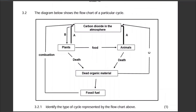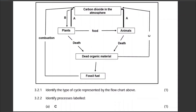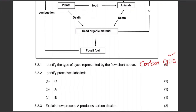The diagram below shows a flow chart of a particular cycle — they're not telling us which cycle it is. It's very easy to identify: keywords like carbon dioxide, combustion, fossil fuels, dead organic matter, animals, and plants are a giveaway. So identify the type of cycle represented by the flow chart — that is obviously the carbon cycle, for one mark.